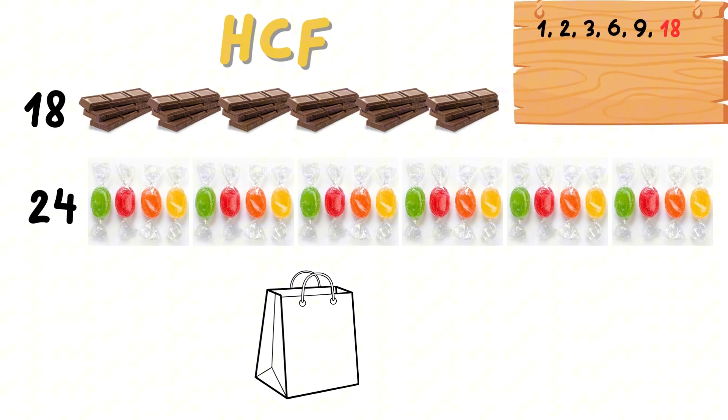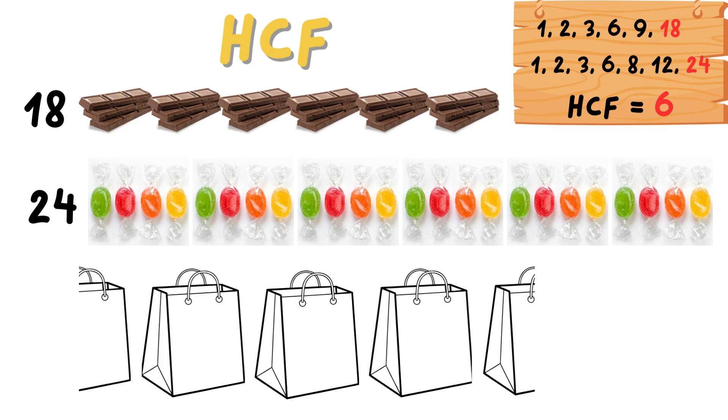First, list the factors of 18 and 24. Then find the highest common factor which is 6. So Mariam can make a maximum of 6 identical goodie bags.